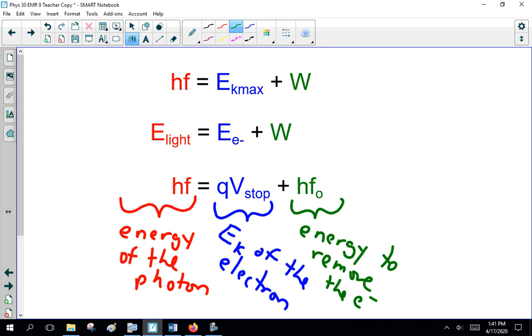You can see why this is the energy of the photon. We have blue here is kinetic energy of the electron. And we have our work function or energy to remove the electron. Energy of the photon, kinetic energy of the electron, energy necessary to remove the electron. You can see why this is popular on the diploma. It's not hard, but there's a lot of steps to it.